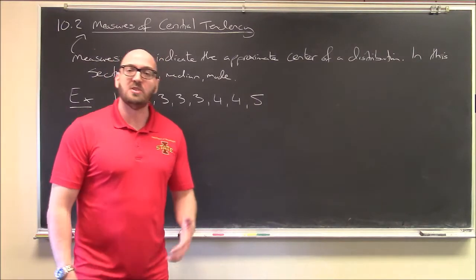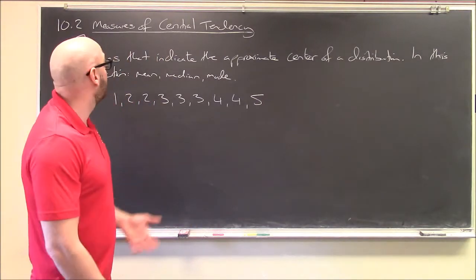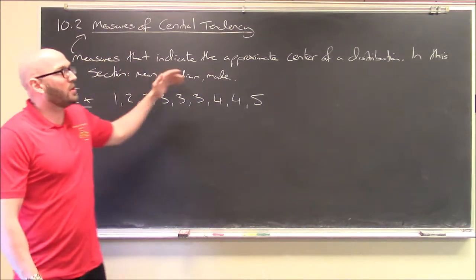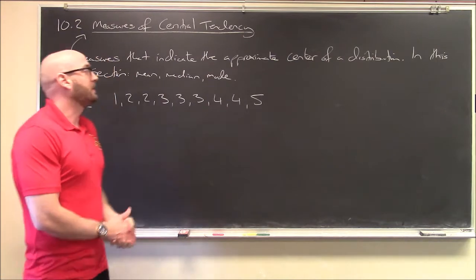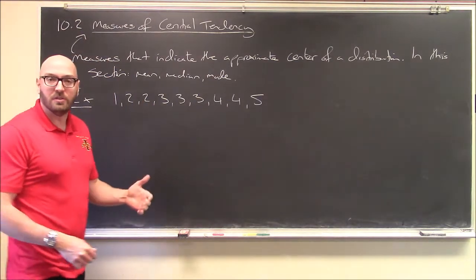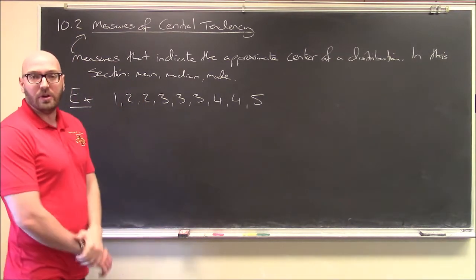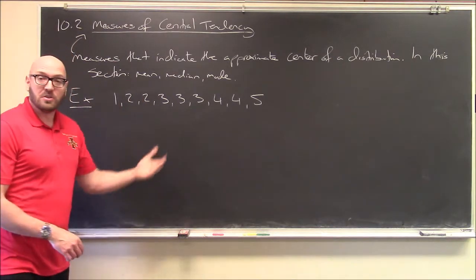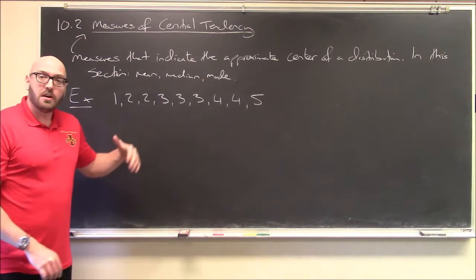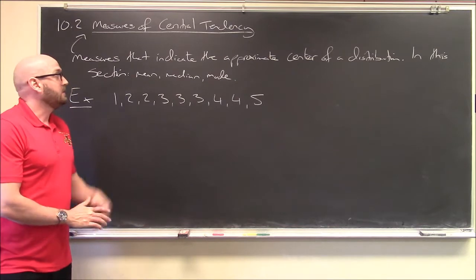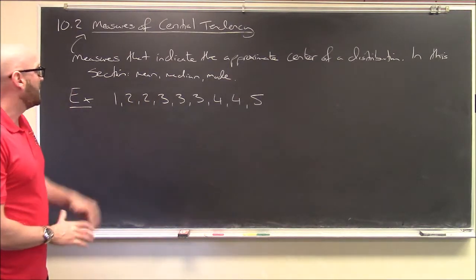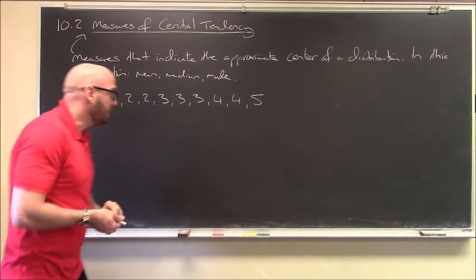Next up we've got 10.2 on measures of central tendency. These are ways or measures that attempt to indicate the approximate center of a bunch of data, of a distribution. In this section we'll be talking about three things: mean, median, and mode. We'll start off with ungrouped data, and then we'll move on to grouped data, where calculating the mean and the median might be something new to you.